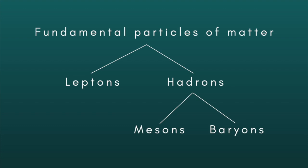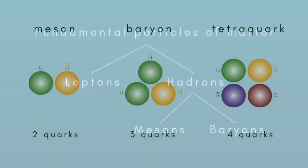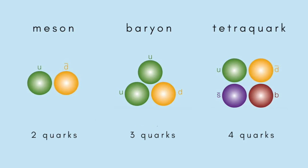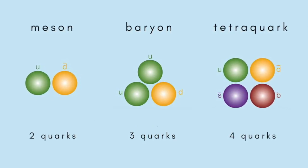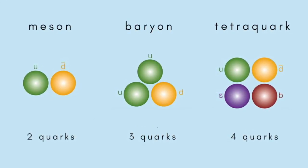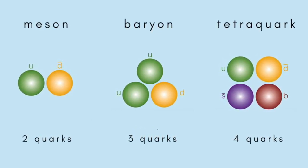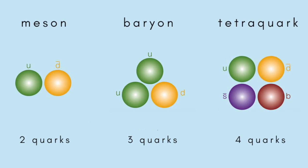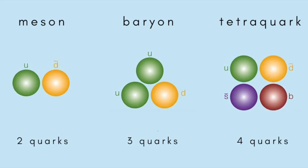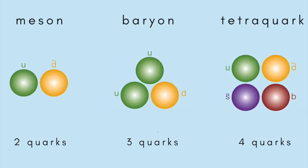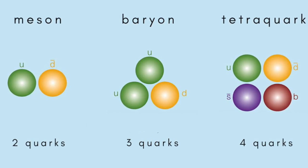Twenty years ago, physicists didn't know of any hadrons that contained other than two or three quarks. Then, in 2003, the first tetraquark, made of four quarks, was found, and since then, researchers have discovered a number of other tetraquarks and pentaquarks containing four or five quarks, all as short-lived products in high-energy collision experiments.